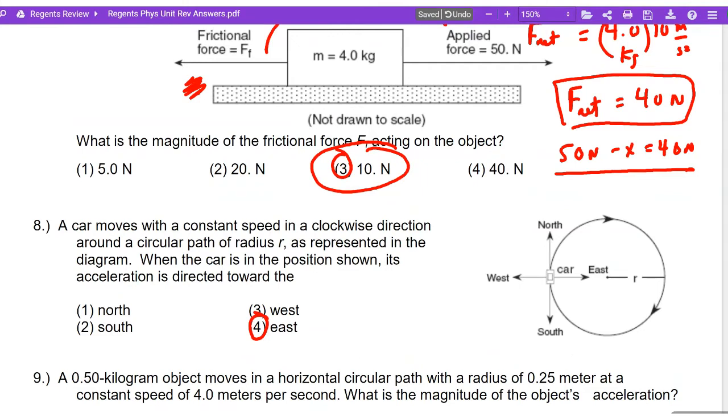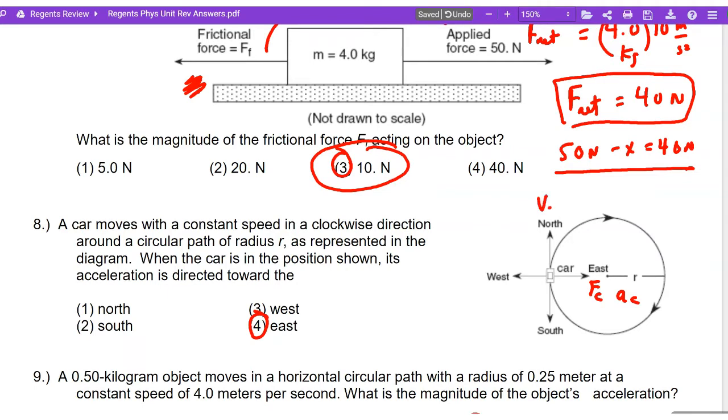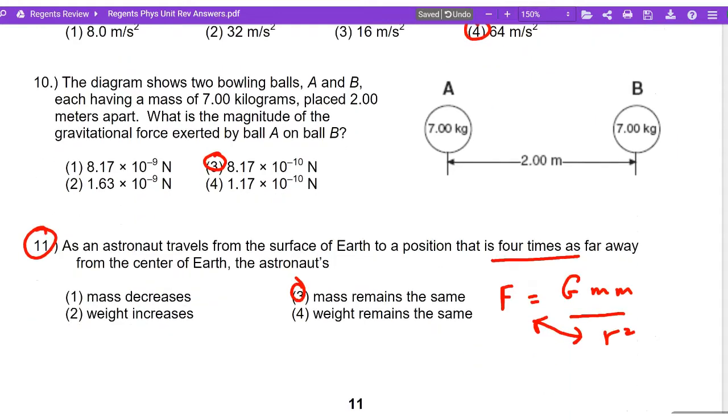Well, you're going to have a question with an object going in a circle. You've got to know that the force and the acceleration are centripetal. The velocity is tangential, so that would be the velocity. What did they ask for? The acceleration, which is centripetal, east. Take a look at the picture.